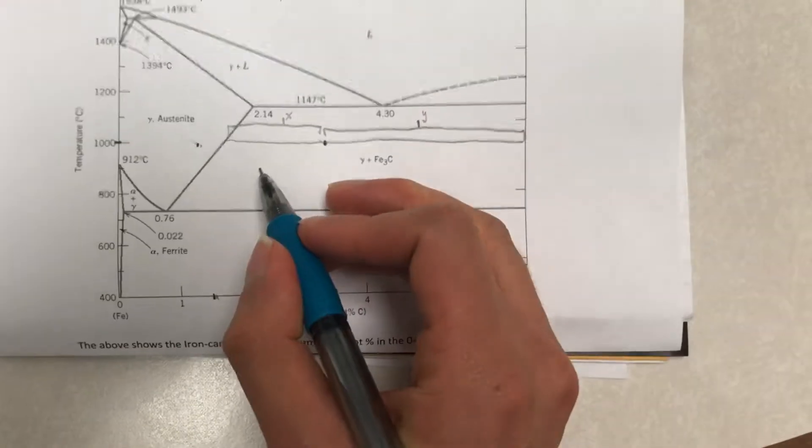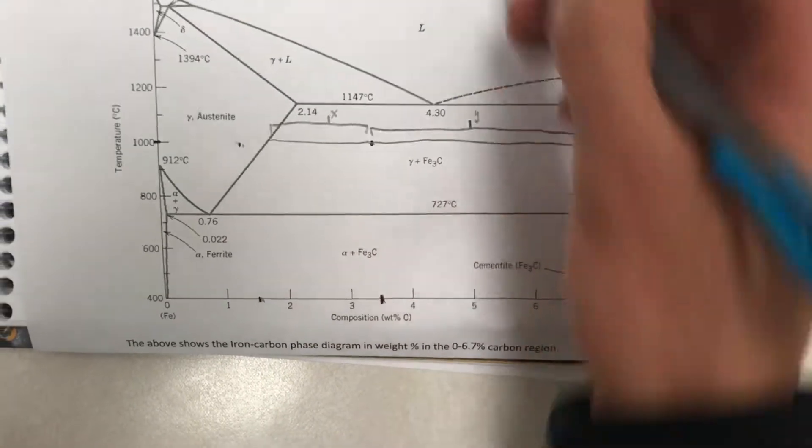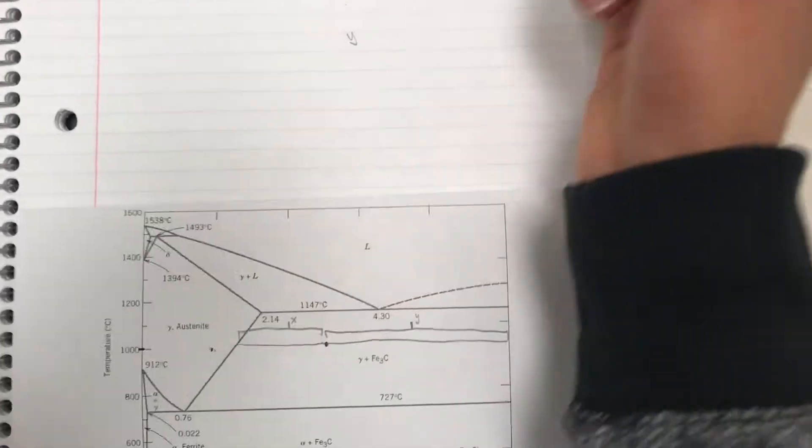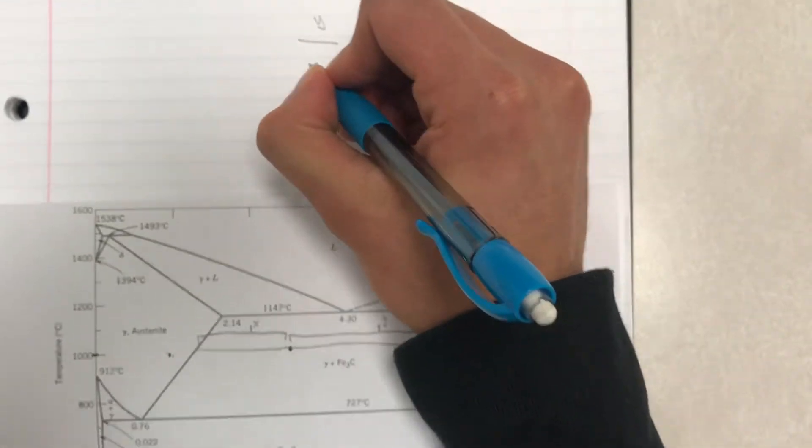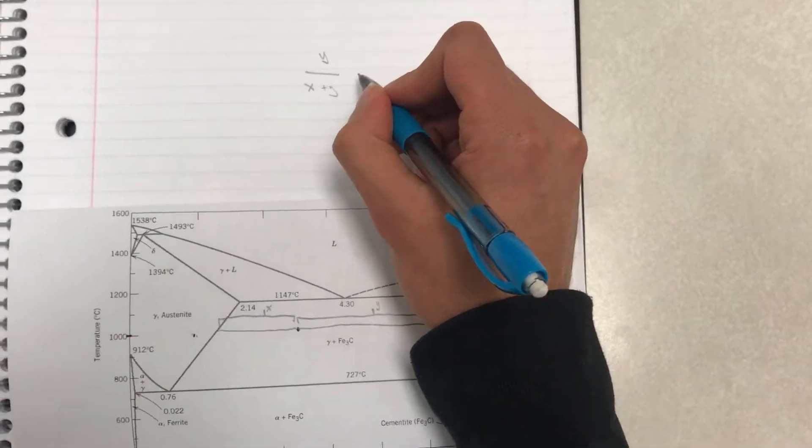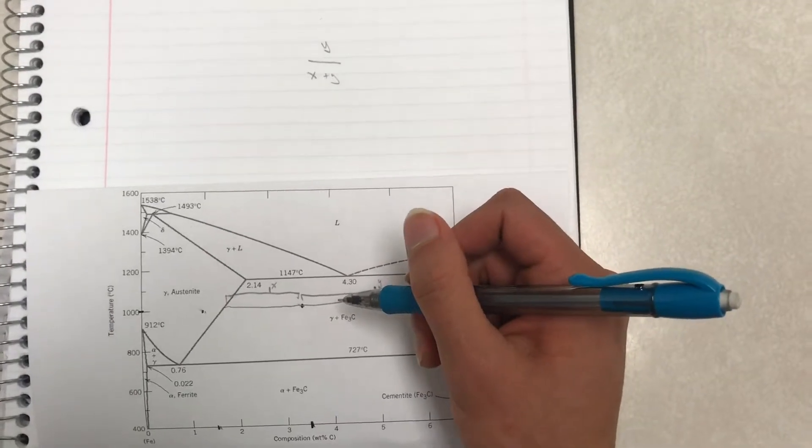So to find the phase fraction of Austenite, we get y over the total x plus y. And whatever that fraction is, is equal to the phase fraction of Austenite.